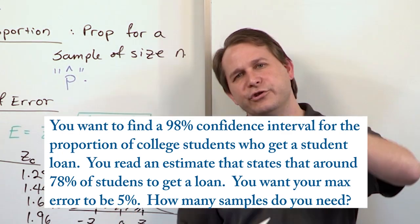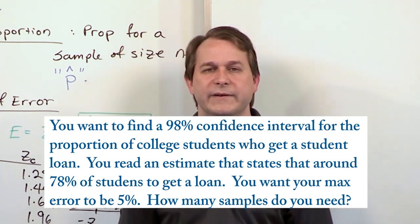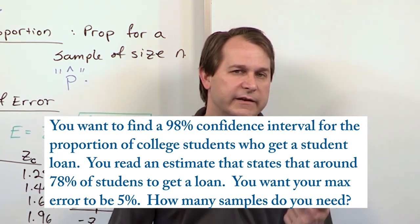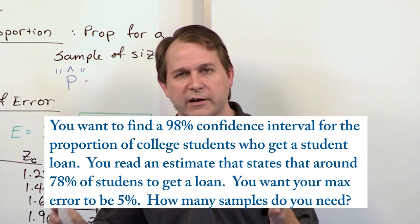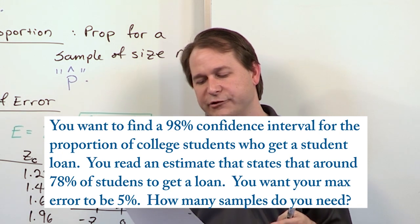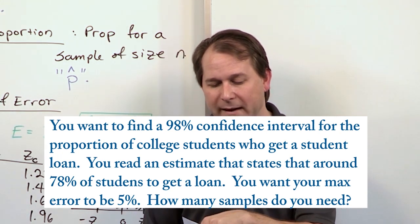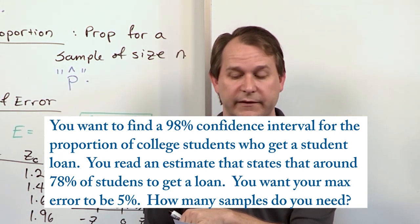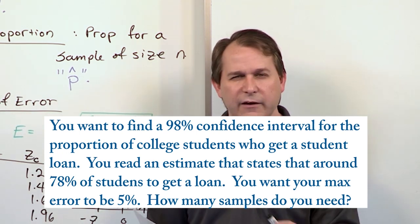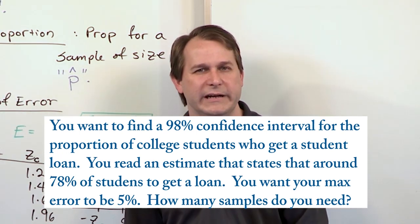See, we've turned the problem around. Usually we tell you how many samples, we tell you the data, we tell you the confidence level, and you have to construct a confidence interval. Here we're telling you that we want the maximum error to be around 5%, and we know everything else, but now we're trying to figure out how many samples do we need.